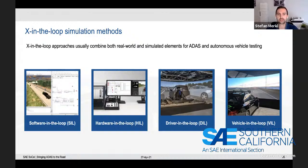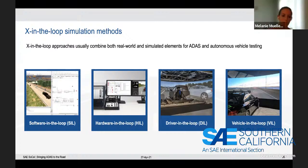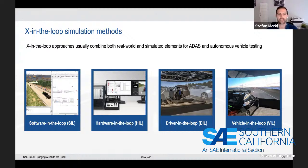As earlier mentioned, simulations are mostly done in a completely virtual environment. But a useful way of using simulation is also to combine them with physical models — that's often called X-in-the-loop simulation. The most common X-in-the-loop approaches for testing of autonomous vehicle systems are software-in-the-loop, hardware-in-the-loop, driver-in-the-loop, and vehicle-in-the-loop.